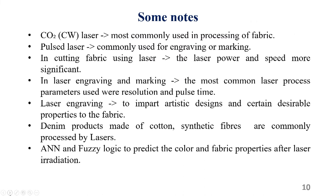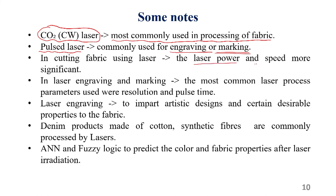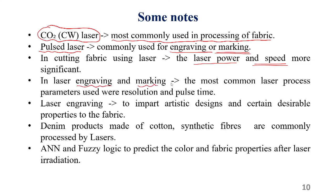Some notes regarding laser-based garment manufacturing: In general, a CO2 laser in continuous mode may be employed for fabric cutting especially. A pulsed laser is required for engraving or marking operations. In cutting of fabric using laser, laser power and speed are the two most influential parameters. In engraving and marking, the most influencing parameters are resolution, spot size, and pulse duration — spot diameter and pulse time are the critical parameters for engraving and marking.